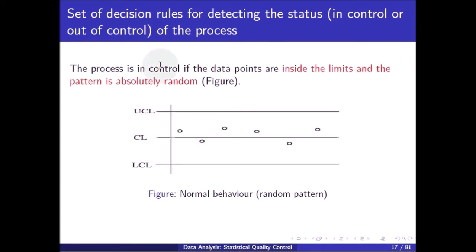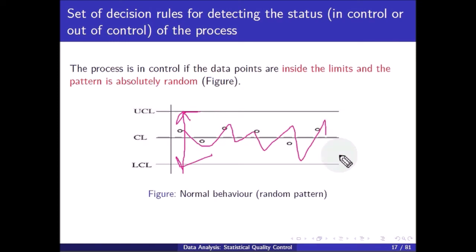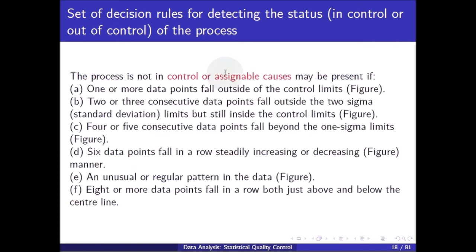The process is in control if the data points are inside the limits and the pattern is completely random. The process is not in control — or assignable causes may be present — if: one or more data points fall outside the control limits; two or three consecutive data points fall outside the two-sigma limits but still inside the control limits; four or five consecutive data points fall beyond the one-sigma limits; six data points fall in a row in a steadily increasing or decreasing manner; an unusual or regular pattern appears in the data; or eight or more data points fall in a row on the same side of the center line.